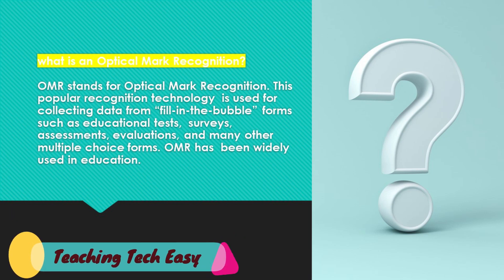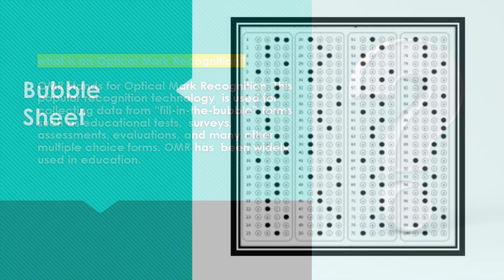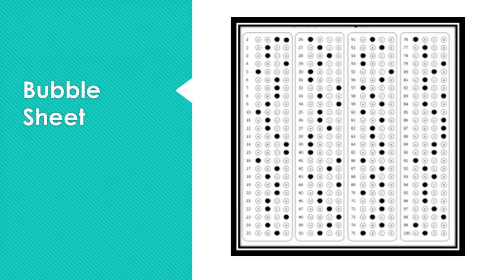What is optical mark recognition? OMR stands for optical mark recognition. This popular recognition technology is used for collecting data from fill-in-the-bubble forms such as educational tests, surveys, assessments, evaluations, and many other multiple choice forms.